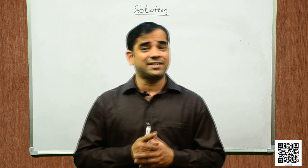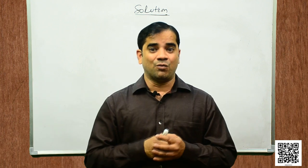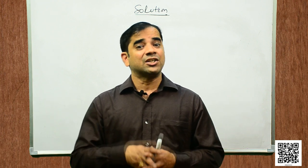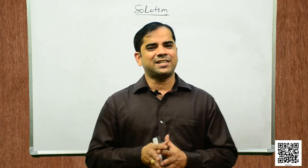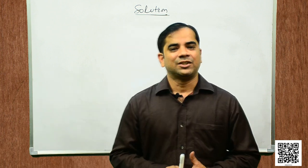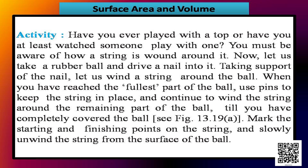You need to note that a sphere is like the surface of a ball. The word solid sphere is used for the solid whose surface is a sphere. Let us now discuss the activity given in your book. Have you ever played with a top or watched someone play with one? You must be aware of how a string is wound around it. Let us take a rubber ball, drive a nail into it, and taking support of the nail, wind a string around the ball.